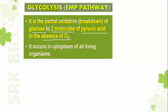What happens during glycolysis? One molecule of glucose is converted — partially broken down — into two molecules of pyruvic acid in the absence of oxygen, and that process is called glycolysis. The site of glycolysis is the cytoplasm, and it is also known as the EMP pathway.